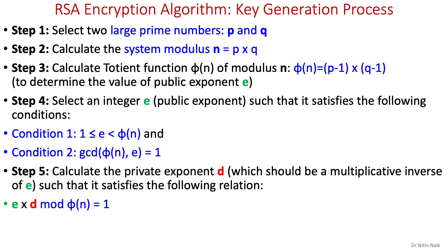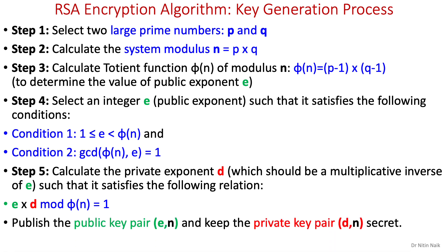In step five, we calculate the private exponent d of the private key such that it satisfies the relation: e × d mod phi(n) = 1, meaning d should be the multiplicative inverse of e. Now we have the values of n, e, and d to form the public and private keys. We can publish the public key and keep the private key secret.